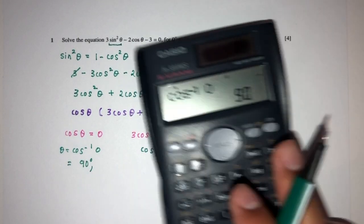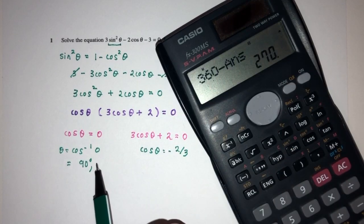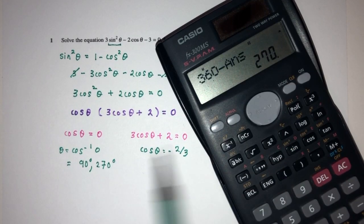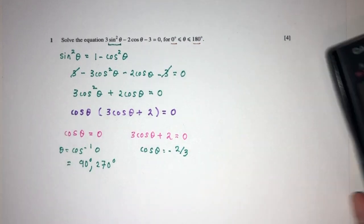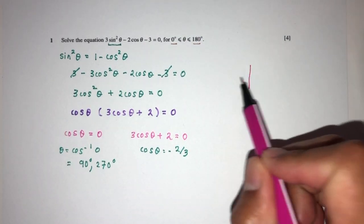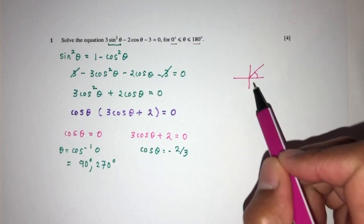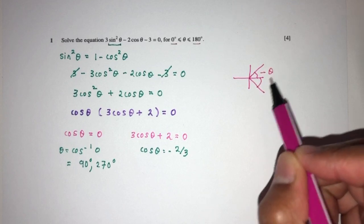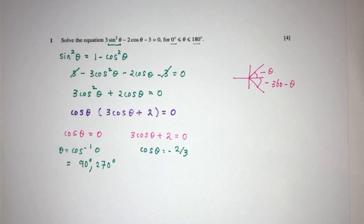Now, this will also be 270, so 360 minus the angle, that will be 270. So we have 2 values for theta in this case, right, because we have to know that even if it is 0, it will have to be in the first quadrant, ASTC in the fourth quadrant. This is simply theta, this is 360 minus theta.